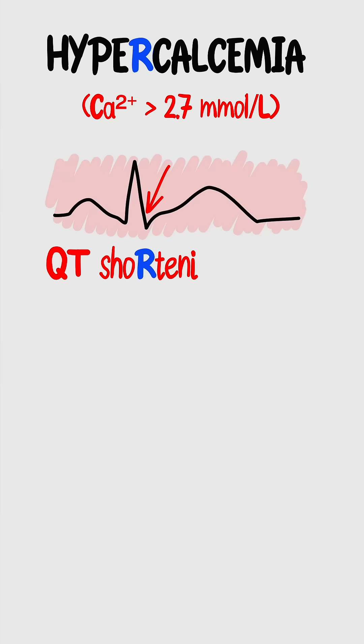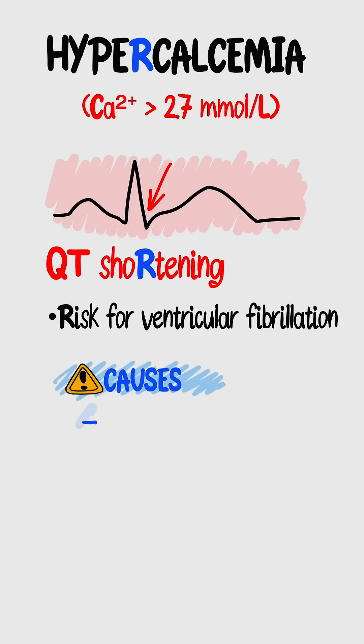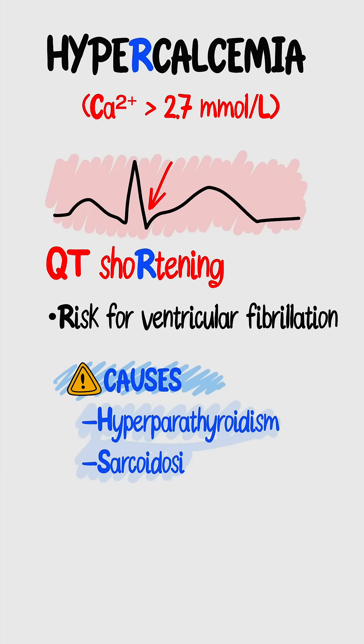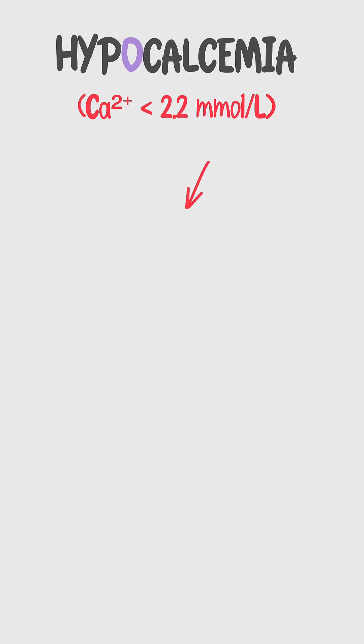Too much calcium — QT gets short. Think risk for ventricular fibrillation. Classic causes: hyperparathyroidism, sarcoidosis, thiazide use, and bone remodeling.